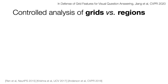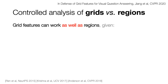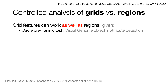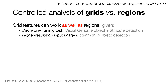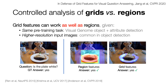Surprisingly, according to our controlled study that got accepted to CVPR this year, grid features can perform just as well as regions if they have gone through the same pre-training task and keep a relatively high spatial resolution. For example, given a question like 'is the plate white?', if the features can provide semantic and spatial cues about what and where a plate is, then they can answer the question regardless of regions or grids.